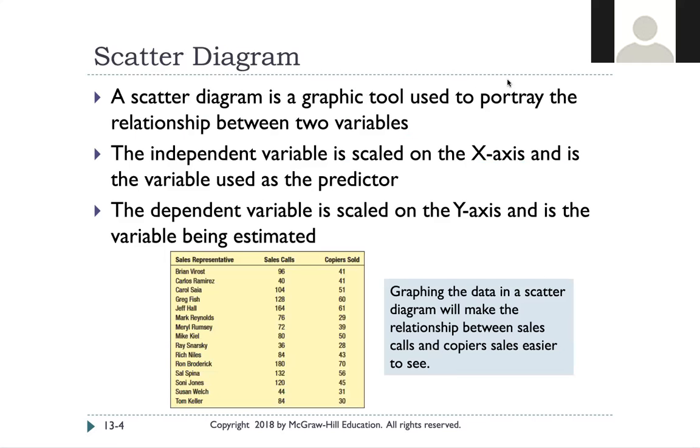This is done graphically through a scatter diagram or a scatter plot. So your independent variable in the example I gave, it would be your height would go on the x-axis and then your dependent variable, the shoe size would go on the y-axis.